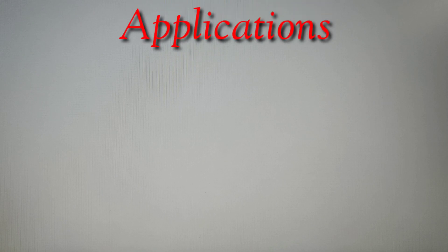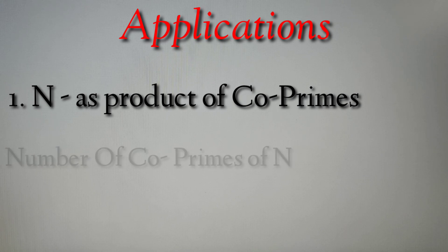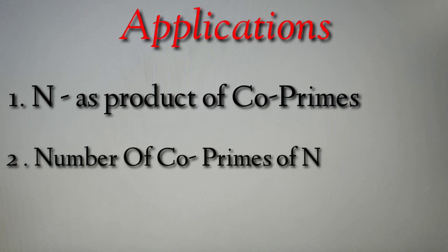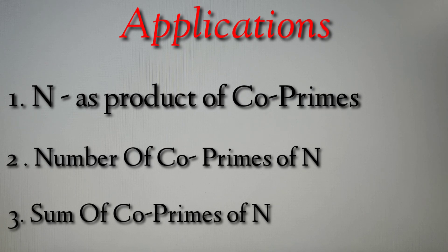In this section we will see some important areas where questions on co-primes are asked in competitive exams. First, as seen in this video: given n, in how many ways can we write it as a product of two co-prime numbers? Second: given n, find the number of co-primes less than or equal to it. Third: given n, find the sum of all co-primes of the number that are less than or equal to it. These three are the most important topics from which questions appear in competitive exams.